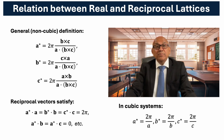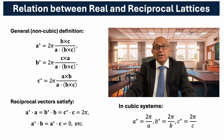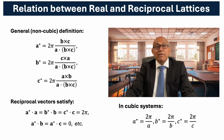For example, the first reciprocal vector A* is given by 2π multiplied by the cross product of B and C, divided by the scalar triple product A·(B×C). Similarly, B* equals 2π times (C×A) divided by A·(B×C), and C* equals 2π times (A×B) divided by A·(B×C).